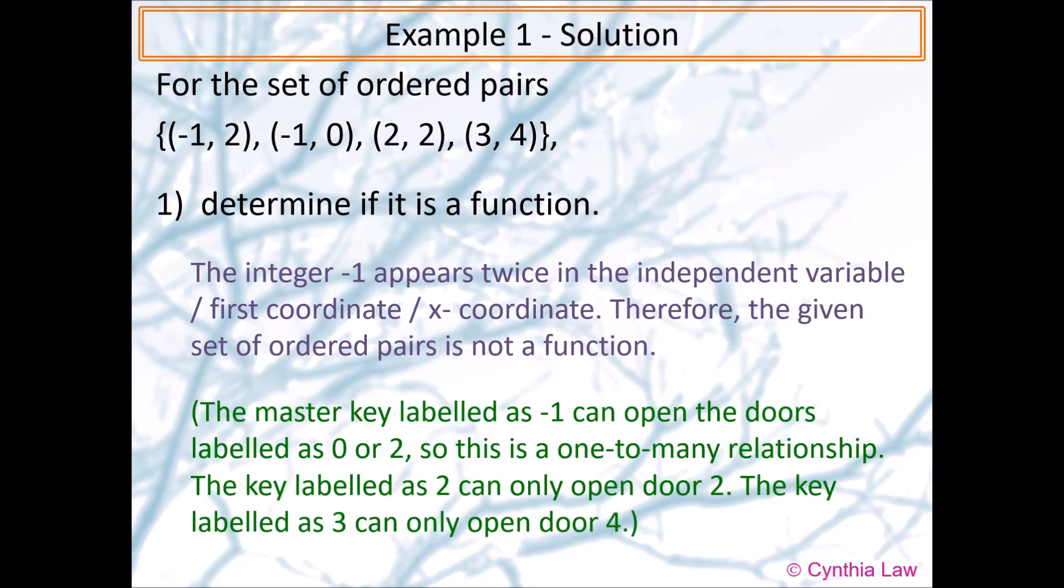We can interpret it as we have a key that has a sticker that says its number is negative one, and this key happens to open door zero and door two. And then we have a different key that is labeled two, and it opens door two as well. And then we have a key that is labeled as three. It opens door four.